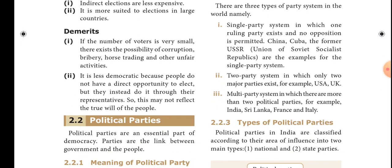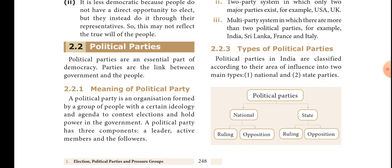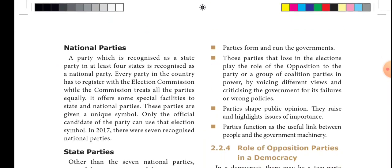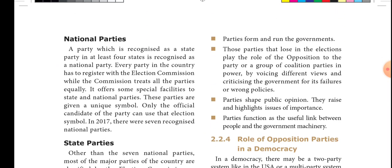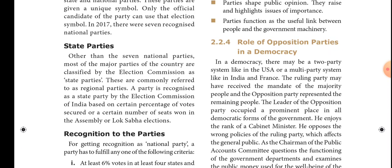Regarding types of political parties, there are two types: national party and regional party. A party which is recognized as a state party in at least four states is recognized as a national party. Every party in the country has to register with the Election Commission, which treats all parties equally. Regional parties are commonly referred to as state parties.